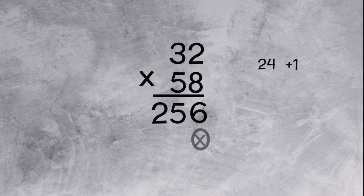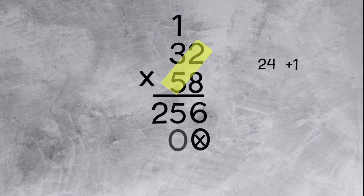24 plus 1 makes 25. Now we need our placeholder because we're going to multiply by the 5, which is in the tens place. Let's repeat the process. 5 times 2 equals 10. Let's carry the 1 and bring down the 0. Now let's multiply 5 times 3. 5 times 3 equals 15 plus the 1 at the top makes 16. Let's write 16.